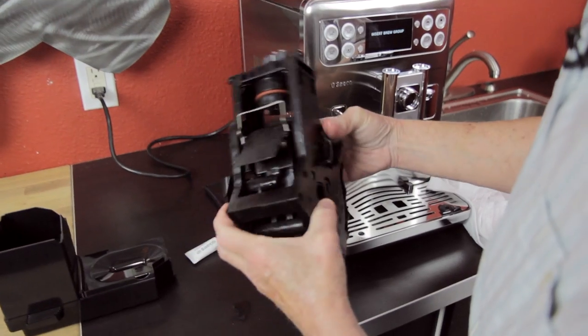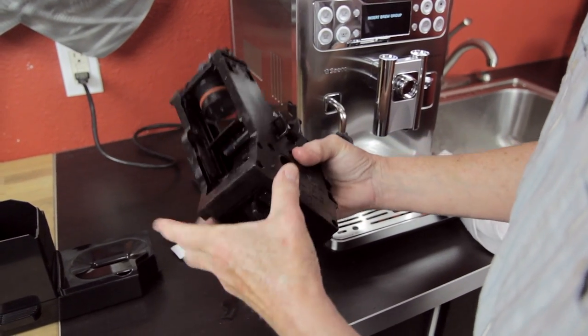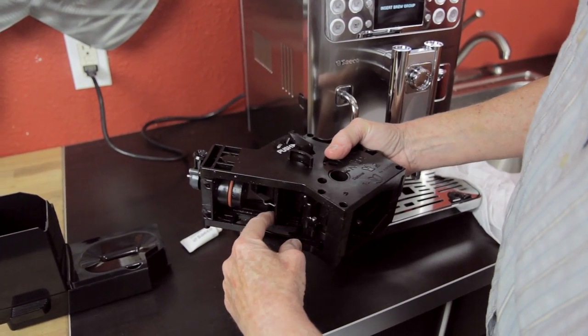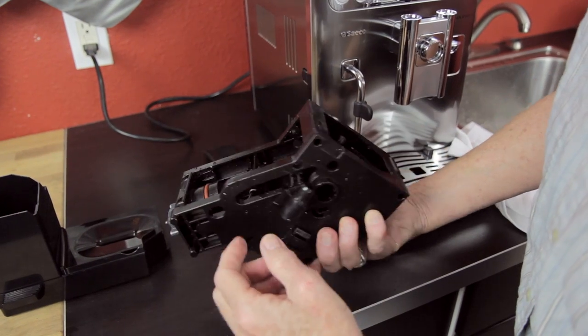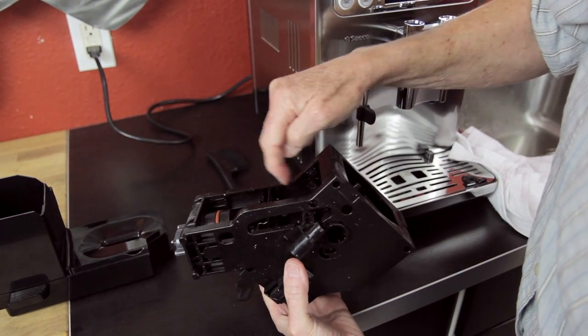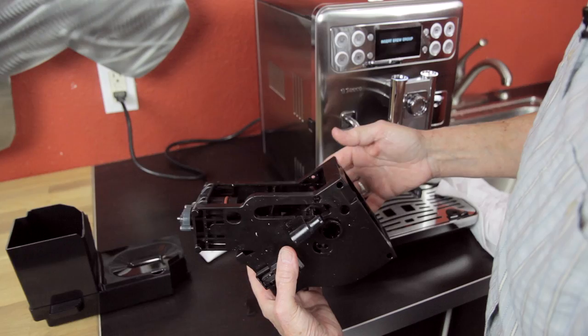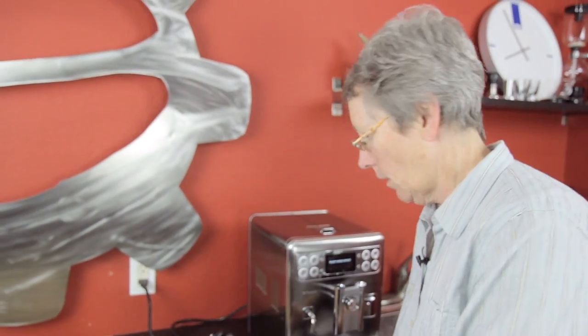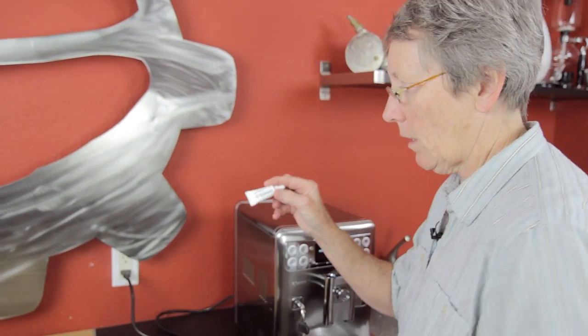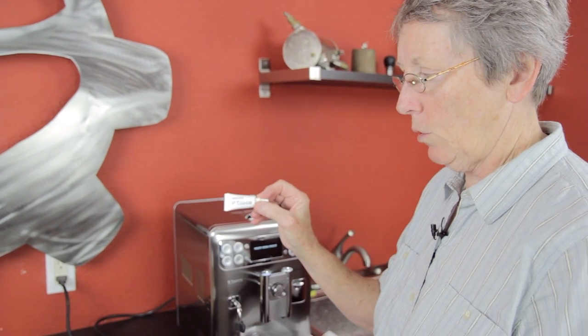There are these grooves on both sides. That's where the brew unit goes up and down, so there are things that ride in that track. In the Saeco maintenance kit, there's this food-grade lubricant. About every six months or so, you want to put this on those tracks.